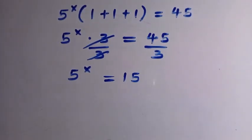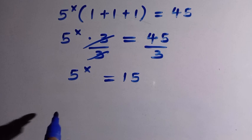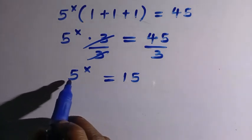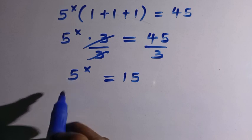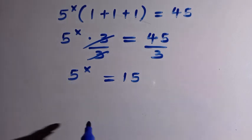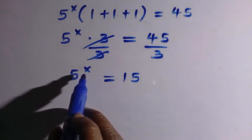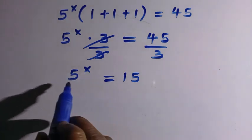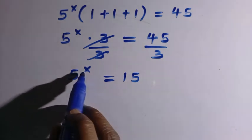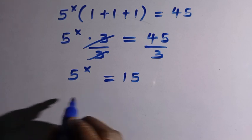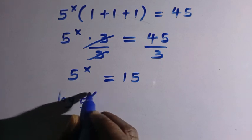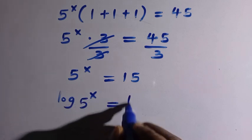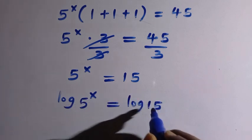Then we have reduced this. After the reductions, we cannot express 15 as the base of 5. So therefore we have to introduce a logarithm to both sides because we need to get this power, which is x. That is the only function that can bring x down. So by doing that we have log of 5 to the power of x equals log 15.